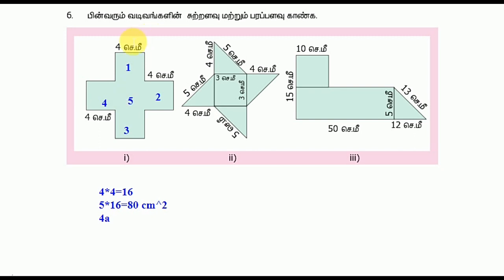So this is the formula. Here we have how many rows: 1, 2, 3, 4, 5, 6, 7, 8, 9, 10, 11, 12 — so here we have 3 rows. So 4 times 3 is 12. So now let's give the 2 here. How many rows will there be? 1, 2, 3, 4 — so 4 equals 48 cm.